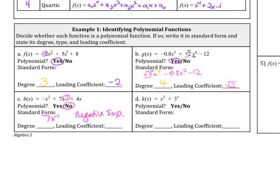Letter D. Is this a polynomial function? This is also a no because there is a 3 to the x that is a variable exponent. It is not a whole number. So therefore, this is not a polynomial.